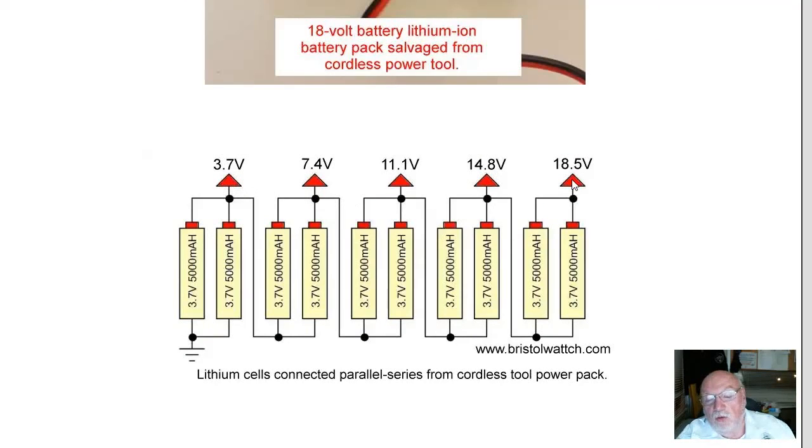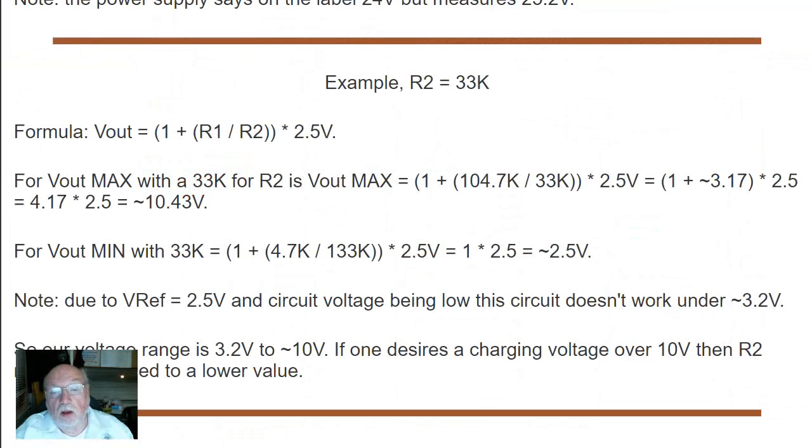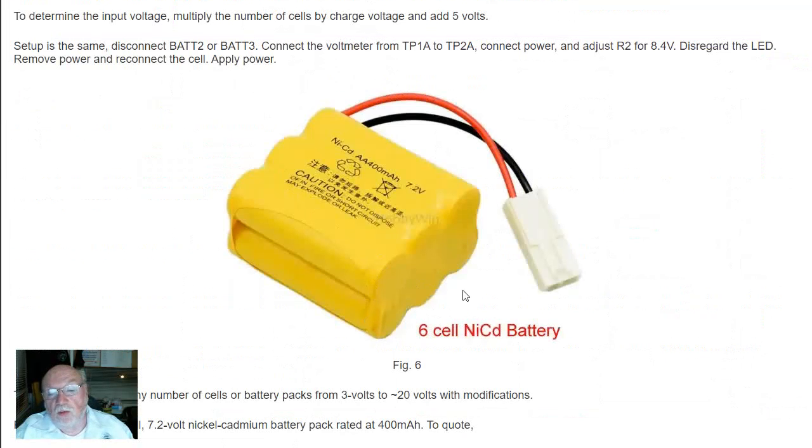So what value do I need for R2 to determine the proper range to charge whatever voltage cells that I am dealing with? Here's my battery charger circuit using the TL431. We're going to calculate the range of cells that I can charge. I could charge a single lithium-ion cell. I could charge, in this case, two of them in series, or I could charge something like this six cell NiCad battery.